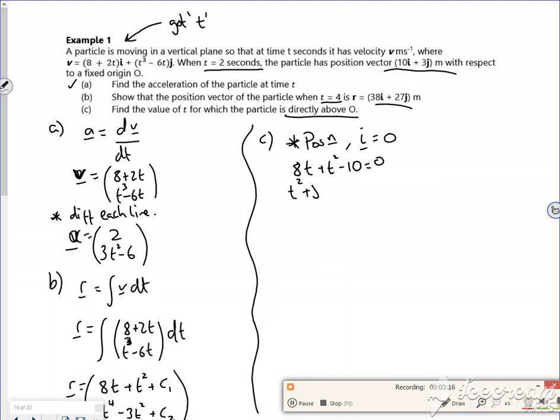So T squared plus 8T minus 10 is equal to zero. You stick that into poly, you get minus 9.099, or T equals 1.099. I want T is greater than zero, because I'm not time travelling. So T is 1.099.